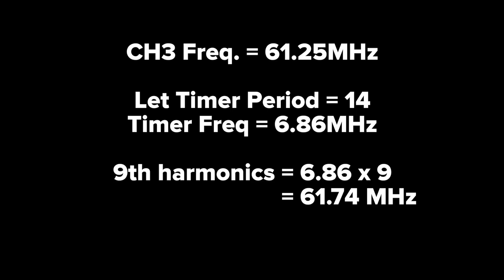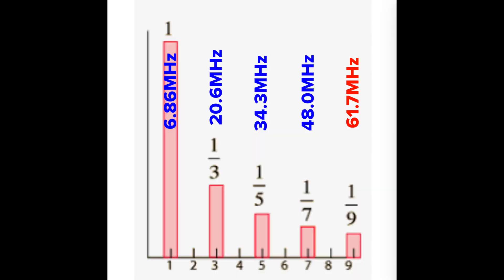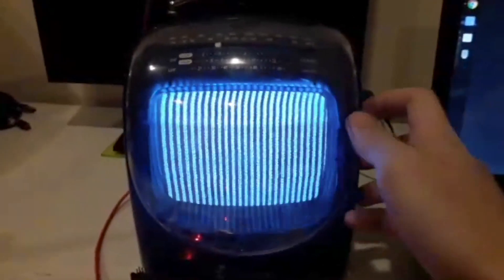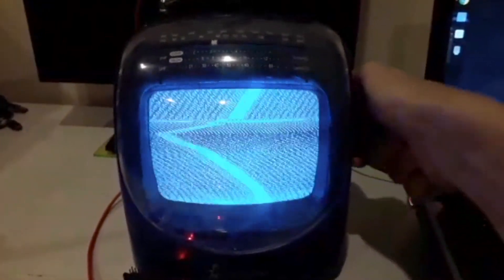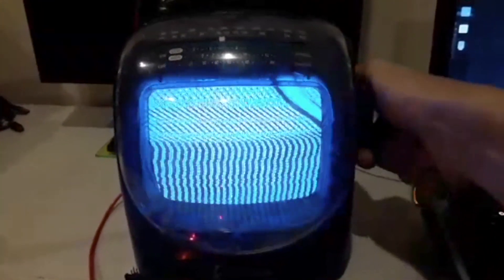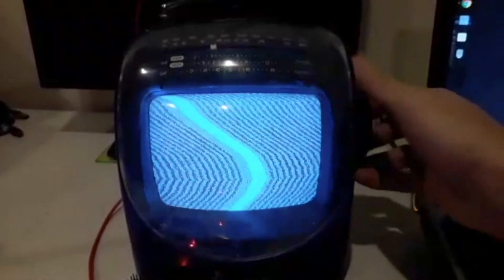As a very extreme case, I decided to go with a timer period of 14, making use of the 9th harmonic, which gives me my channel frequency. In a practical world no one would transmit a square wave because it would affect the other channels.